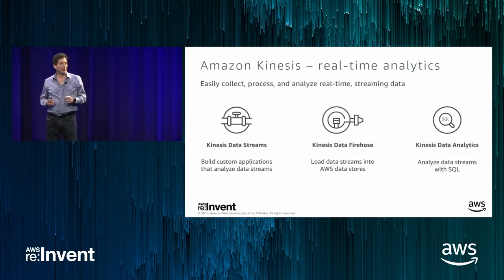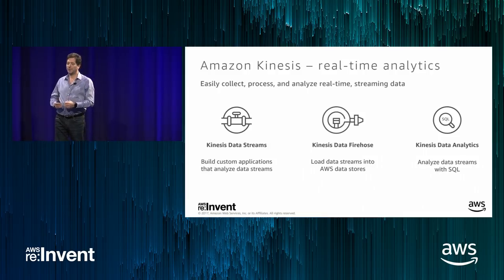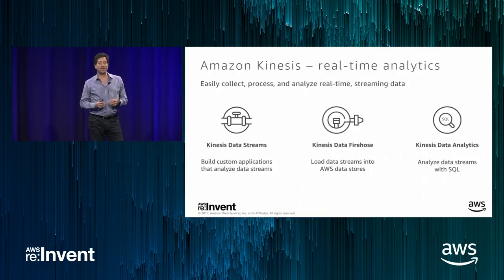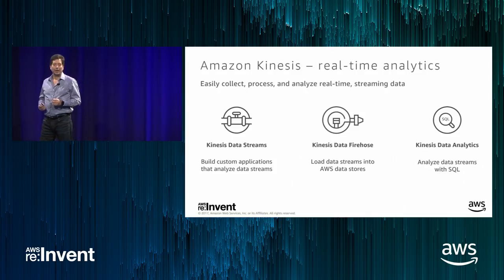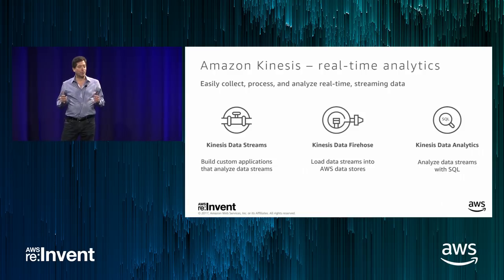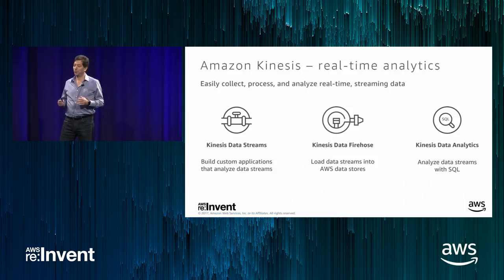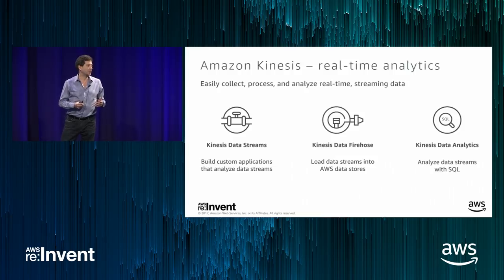In 2015, we released Kinesis Firehose, which will within minutes deliver data to AWS services. We announced just a couple days ago that Splunk is now a destination for Firehose, joining S3, Redshift, Elasticsearch, and more to come. The third service is Kinesis Data Analytics, which performs streaming SQL in a serverless fashion over data coming through a Firehose or Kinesis stream for real-time stream processing and analytics, with machine learning algorithms as well.